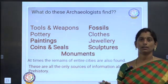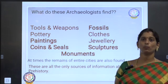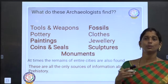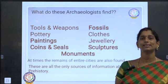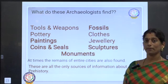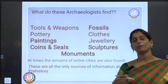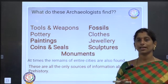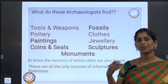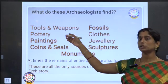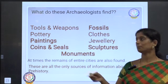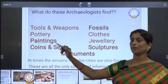We have seen what are the works of archaeologists, where they work, how they work. Now, what do they get from these sites? The things which give us information about history include: tools and weapons handled by various people during various periods — stone age or by kings who ruled — and pottery, the vessels they used, which have also been found.